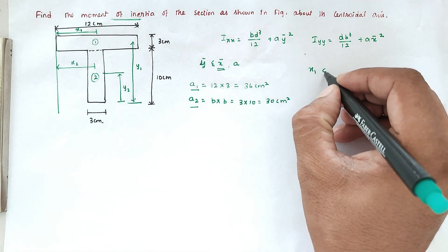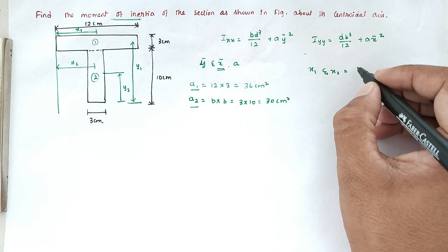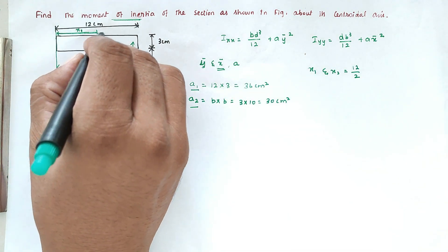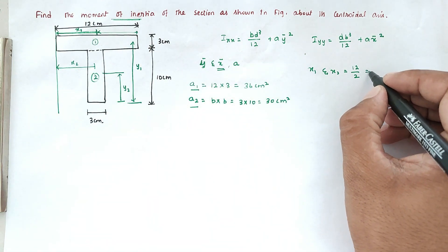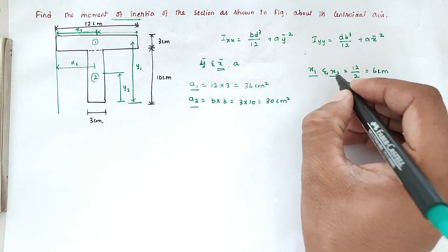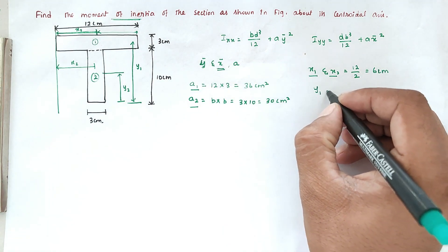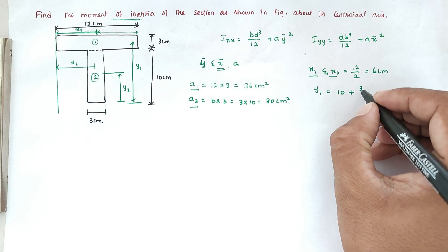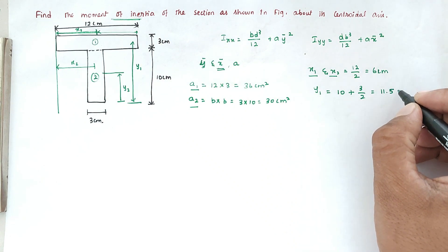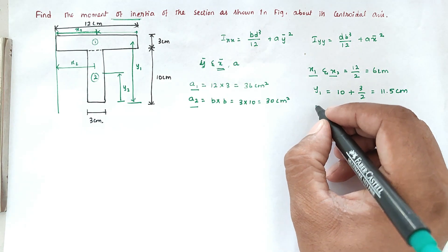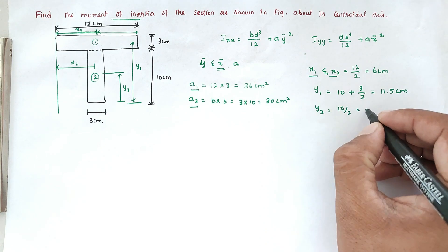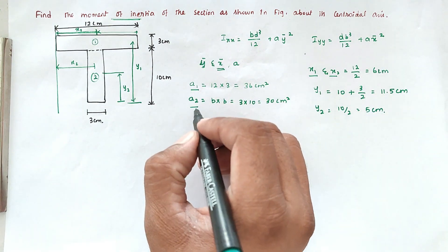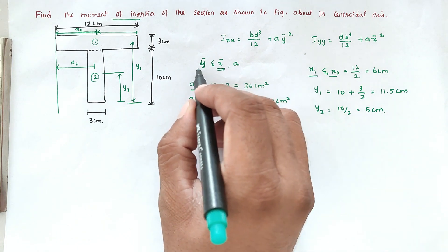For the centroid distances: x1 and x2 both equal 12 cm divided by 2, giving 6 cm. The y1 value is 10 cm plus 3/2, which equals 11.5 cm. The y2 value is 10 divided by 2, which is 5 cm. So we now know x1, x2, y1, y2, A1, and A2.